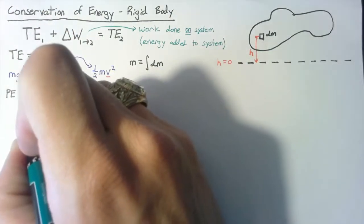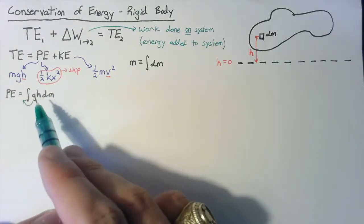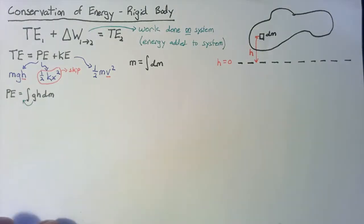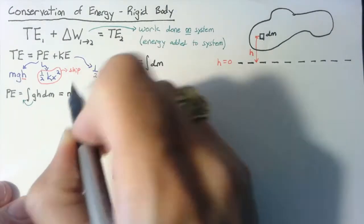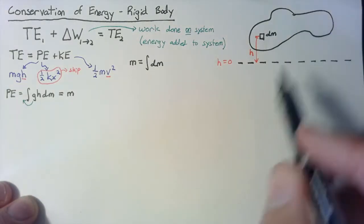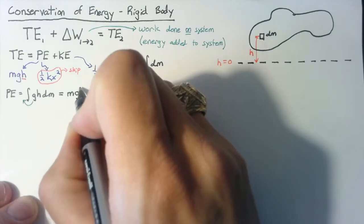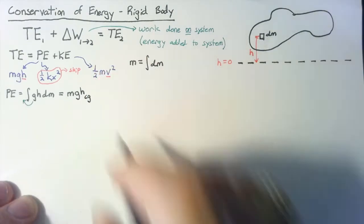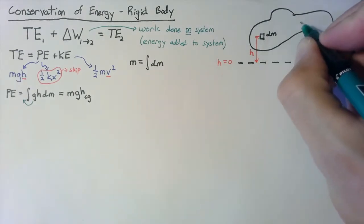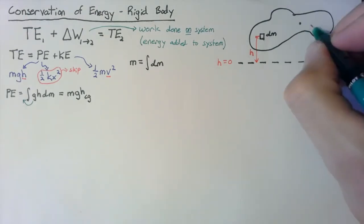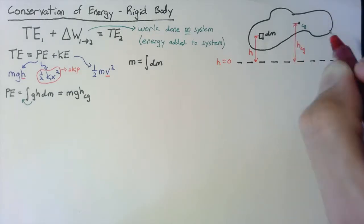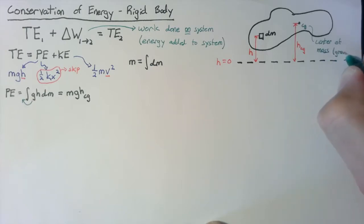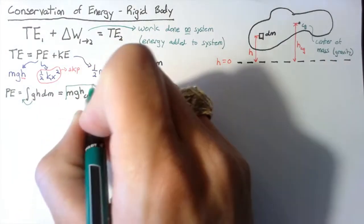Our potential energy is the integral over the entire body of g times h times dm. Since g is a constant, we can move it outside, leaving the integral of h times dm. That integral equals the mass multiplied by the height of the center of mass of the entire body. So this becomes mg times h_cg — the height of the center of gravity. This is our final formula for the potential energy.